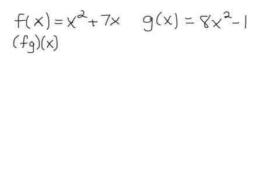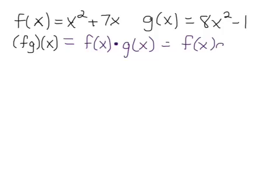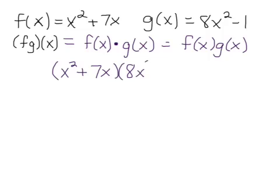Our next operation is multiplication, also written as f with a closed dot in between, or as two functions written directly beside each other — all of this means multiplication. So we have x squared plus 7x times 8x squared minus 1.